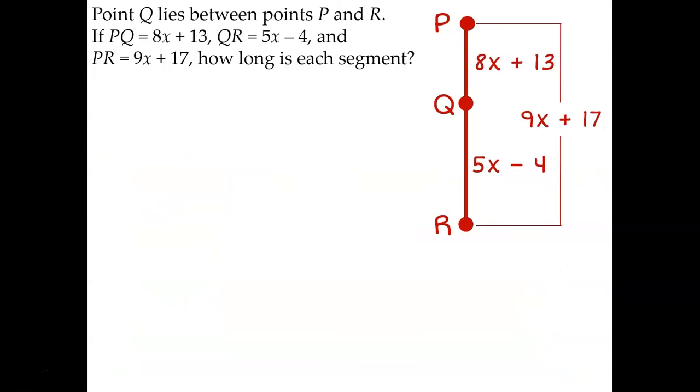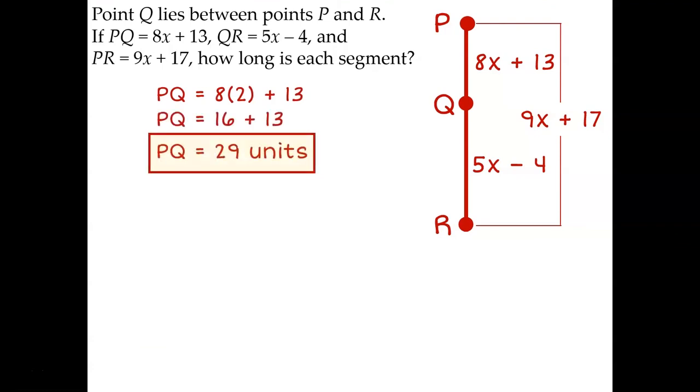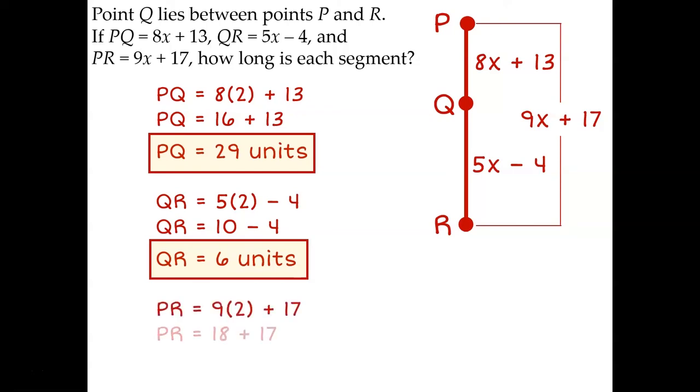Now that I know x is 2, I can plug 2 in to figure out the length of each of these 3 segments. PQ would end up being 29 units, QR is 6 units, and PR is 35 units.